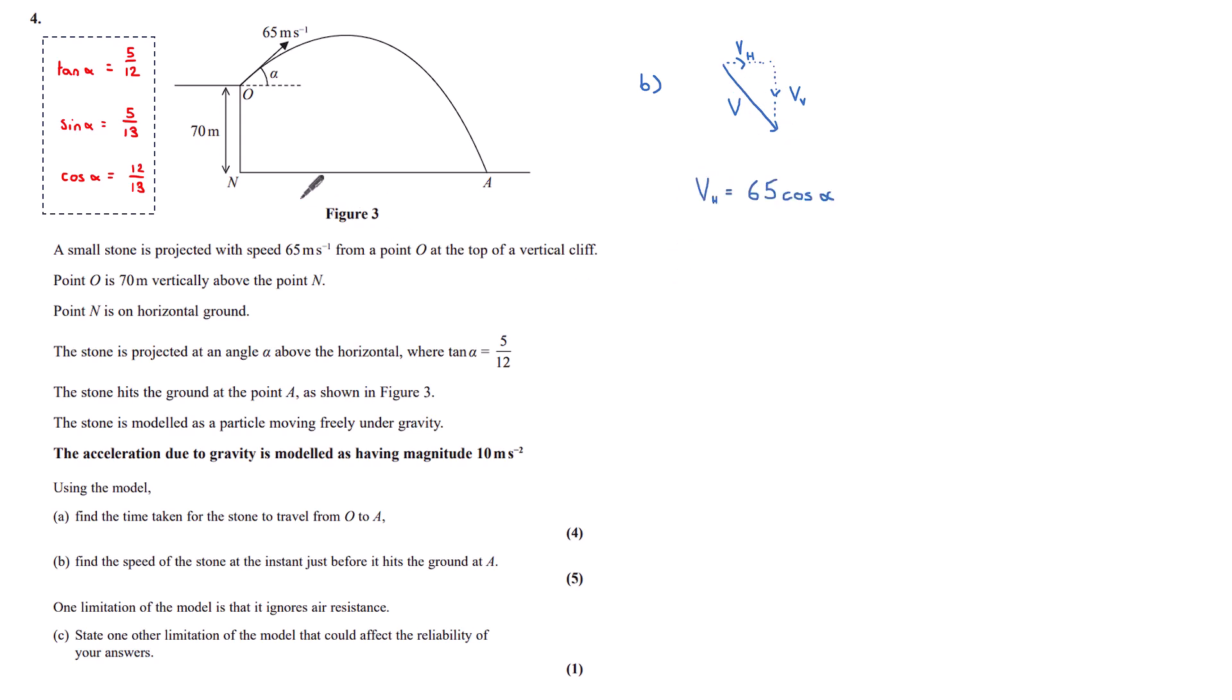Thankfully, in projectile questions, because we have zero acceleration acting in the horizontal plane, the horizontal speed is constant throughout. So the horizontal component of speed here is 65 cos alpha. Cos alpha is 12 thirteenths. And so 65 times 12 thirteenths is 60. So my constant horizontal component is 60.